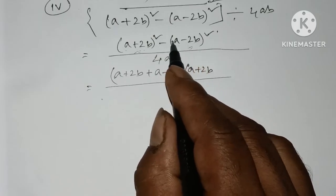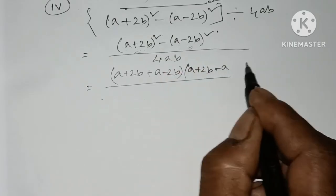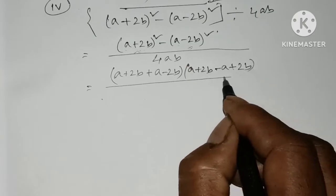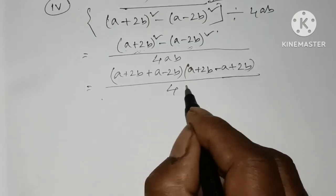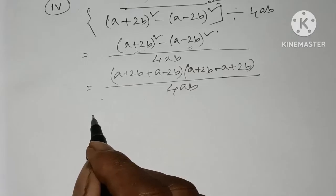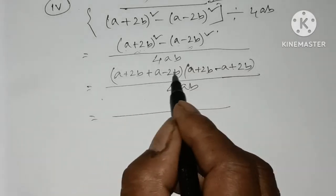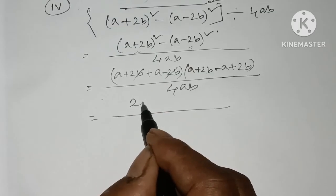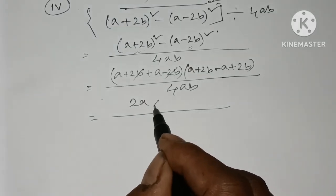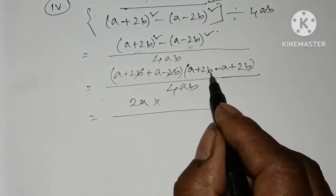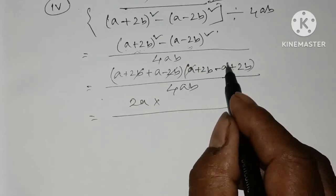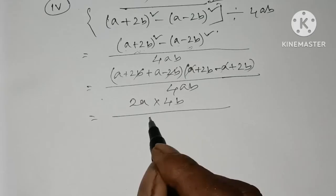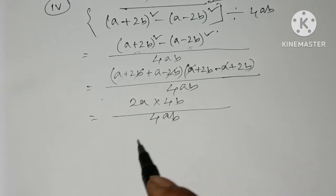What will be A minus B? So this is minus A plus twice B. So this is 4ab. I have A plus B plus B minus A. This is 4ab.